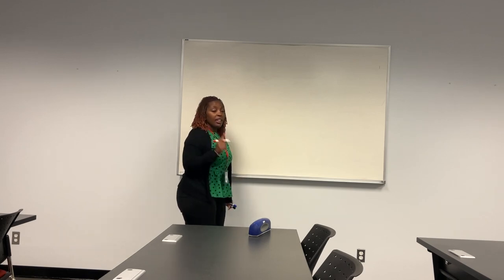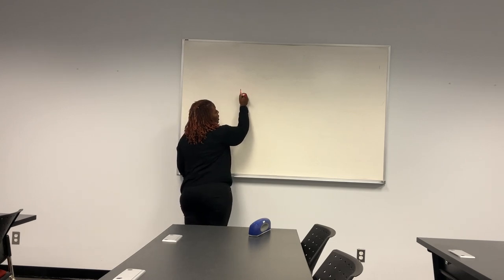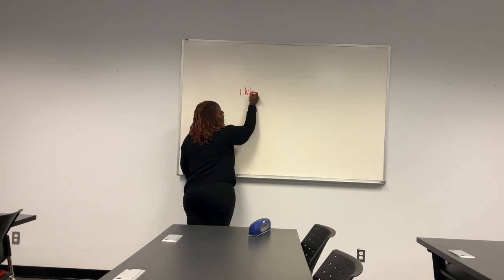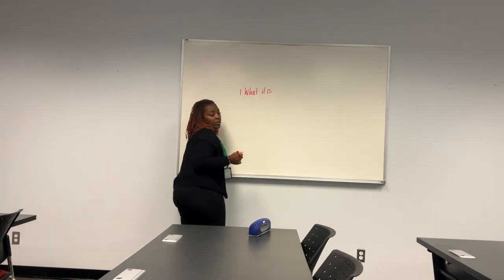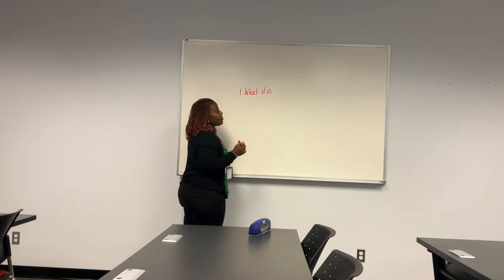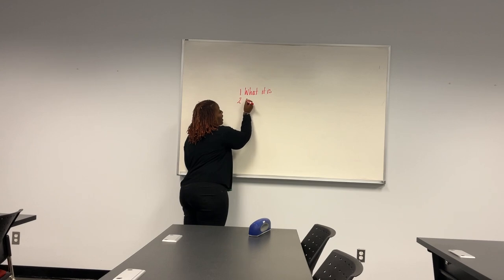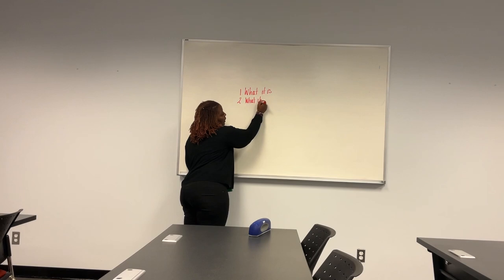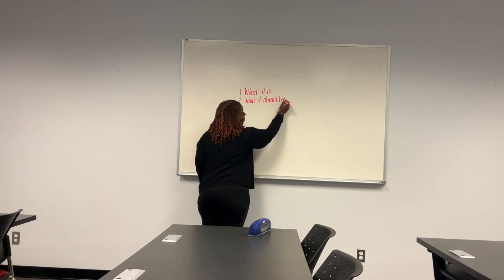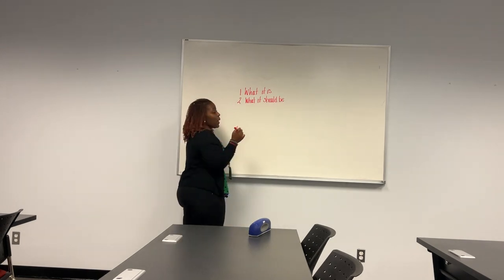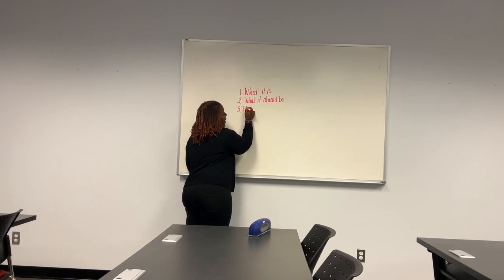What I always teach: number one, you look at what it is — is it 2,000? Is it 3,000? We then find out what it should be. And then lastly, we find the difference.